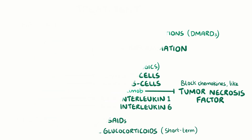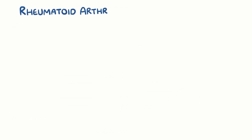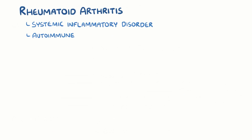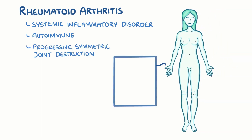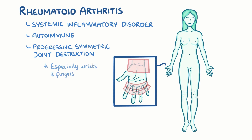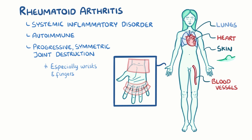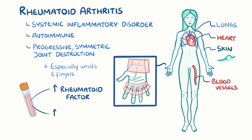As a quick recap, rheumatoid arthritis is a systemic inflammatory disorder of autoimmune origin that's primarily characterised by progressive symmetric joint destruction, especially in the wrists and fingers, but may also affect other joints and many organs such as the skin, heart, blood vessels, and lungs. It is marked by elevated rheumatoid factor and anti-cyclic citrullinated peptide antibodies.